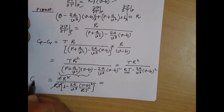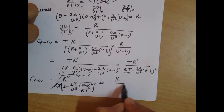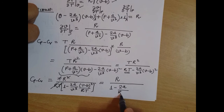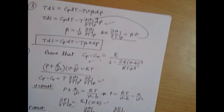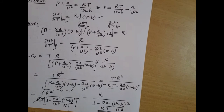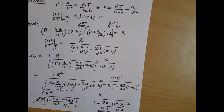We finally get Cp minus Cv equal to R, which is the expression we had to prove. Hence, we have proved it. Friends, you can see how straightforward these thermodynamic relations are — but you have to practice them very much, then only you will be able to solve new challenging problems of this chapter. Thank you so much, stay connected. If you like my video, please do subscribe.